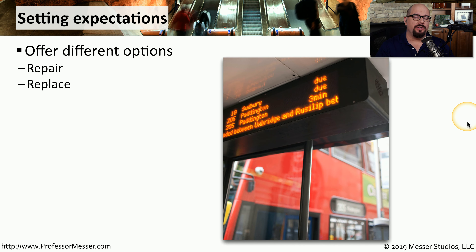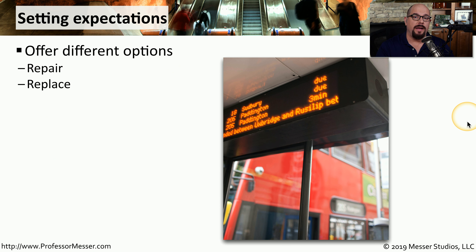Most of the time, customers aren't concerned about the details of how you're fixing a problem — they're more interested in understanding the process and what they can expect for the resolution. Set expectations by outlining their options: provide a plan A, a plan B, and a plan C, and let them make the decision. For example, if a printer isn't working, the options might be to repair it at a certain cost or replace it at a different cost, and the customer decides which path is appropriate for them.